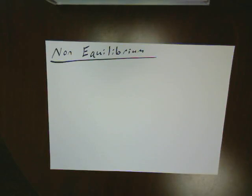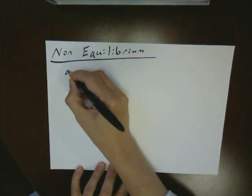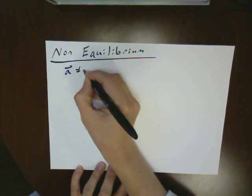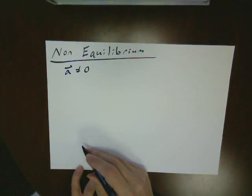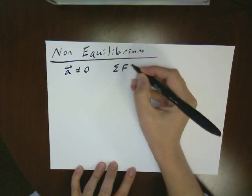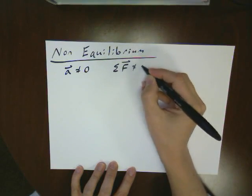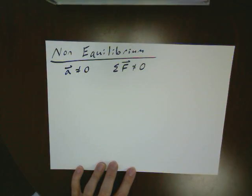We've looked a little bit at some equilibrium problems. So let's come back and look at the more general case where we have non-equilibrium. In that case, what we know is that the acceleration is not equal to 0. We're going to have an acceleration. And that's because the vector sum of the forces is not equal to 0.